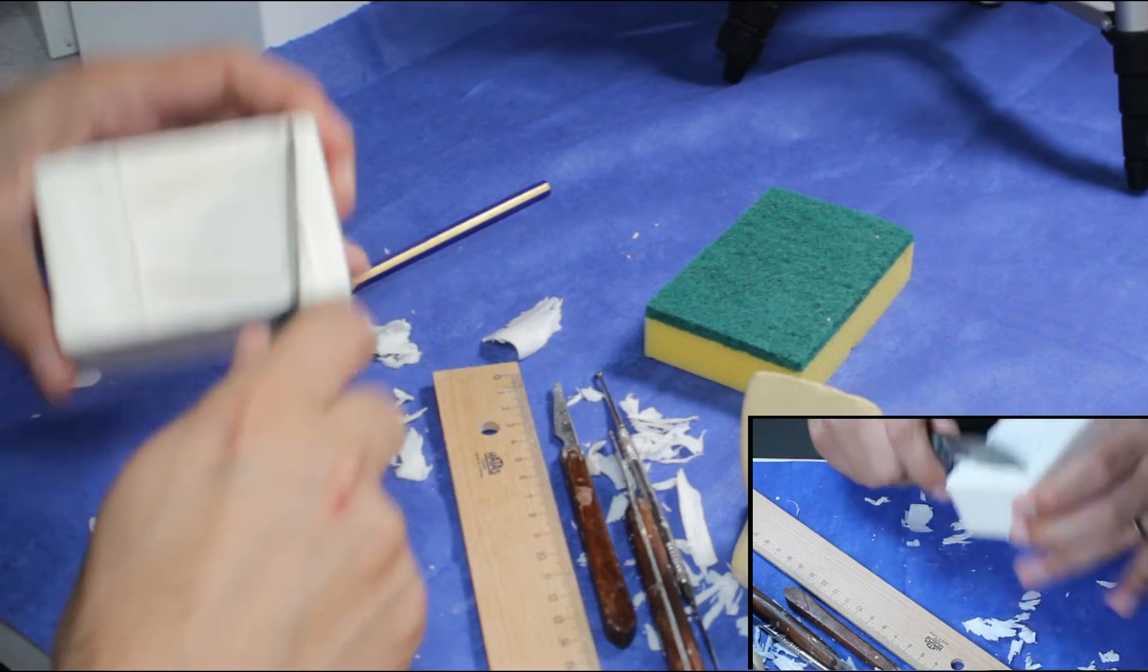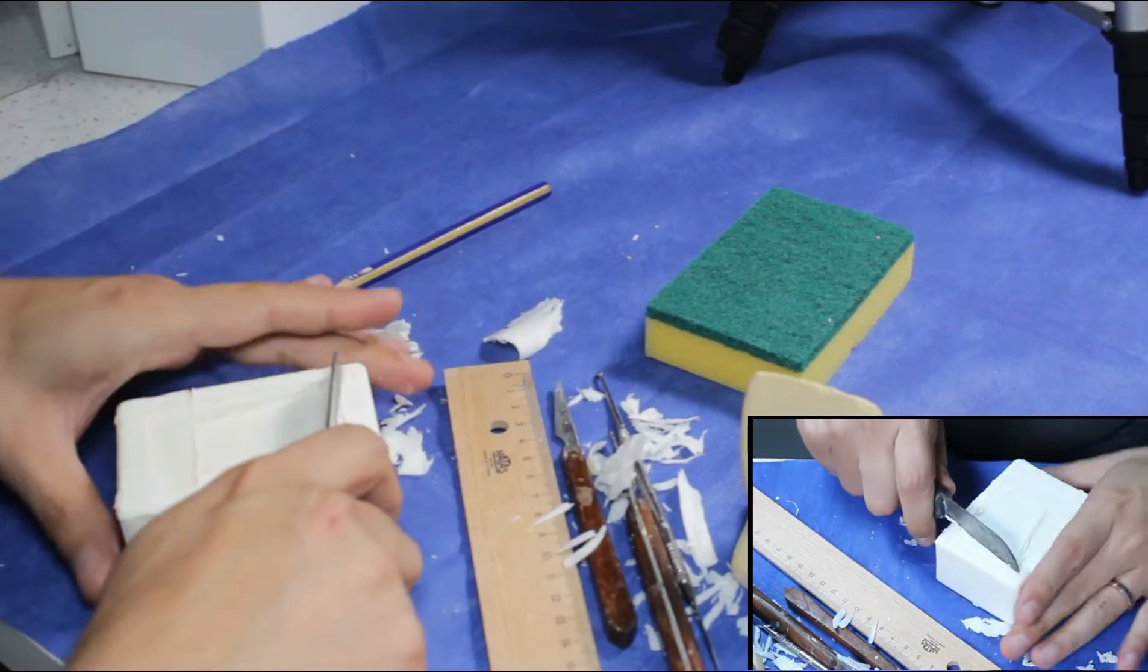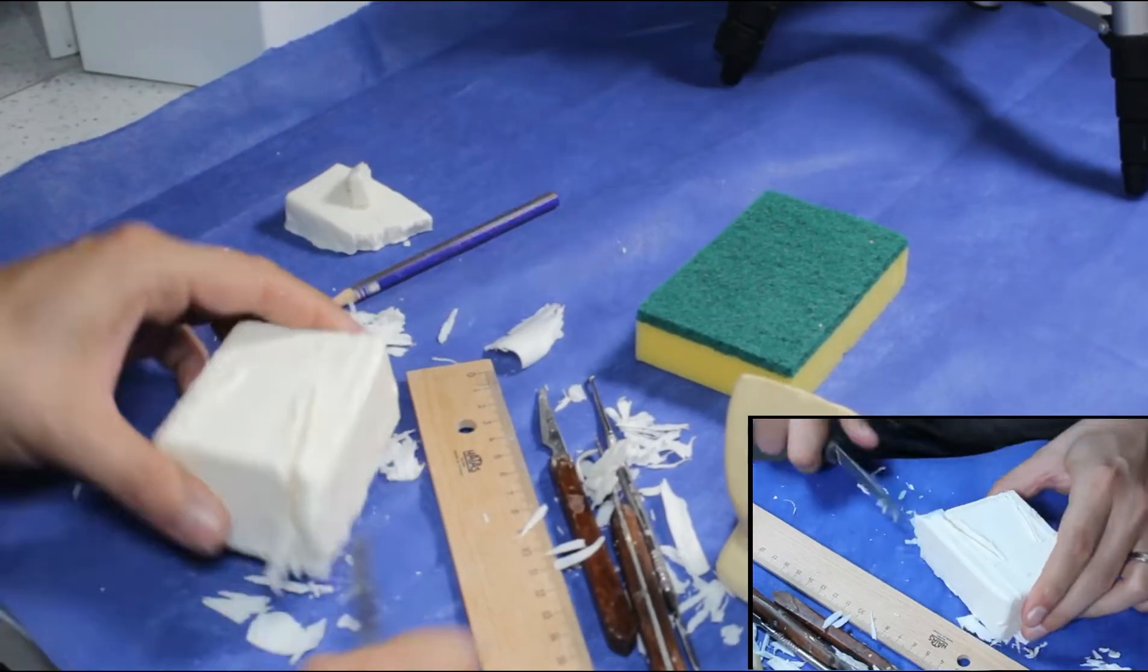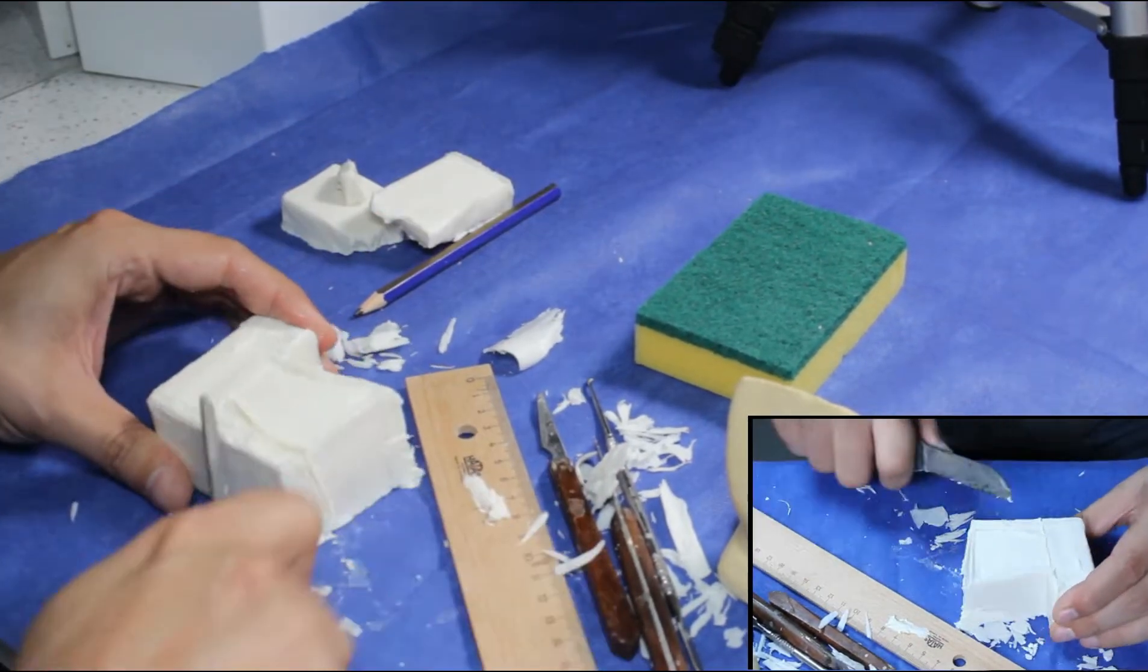Now we will cut the regions which are out of the drawn teeth. Cut carefully with a plaster knife. Follow the lines and hold the knife parallel to them.